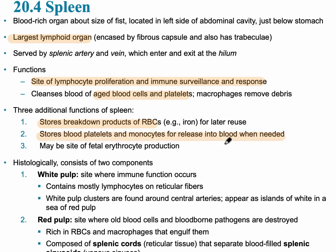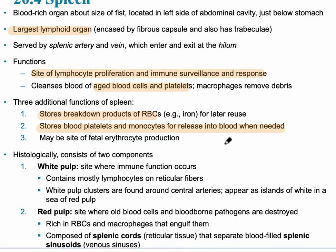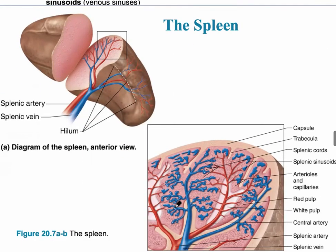The two areas within the spleen, histologically, are referred to as white pulp and red pulp. The white pulp is the site for the immune function and specifically contains mostly lymphocytes. The red pulp is where old blood cells and pathogens are destroyed.